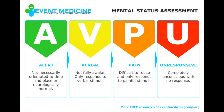P stands for pain, which means the patient responds to a painful stimuli. Some painful stimuli include sternal rubs, clavicle pinches, or nail squeezes. When a painful stimulus is performed, if a patient opens their eyes, responds verbally, or moves towards or from the pain, they are rated a P on the AVPU scale.